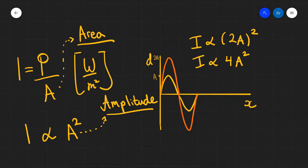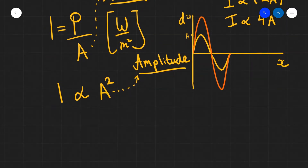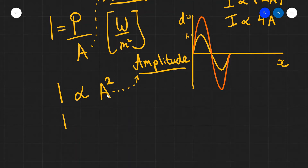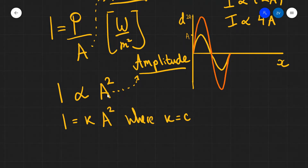Before we look at the problems, I will show you one final trick, which stems from GCSE maths. Any time we have a quantity which is proportional to another quantity — for instance, intensity being proportional to the amplitude squared — we can always introduce a constant of proportionality. This means we can rewrite the formula simply as I equals kA squared, where k is a constant.